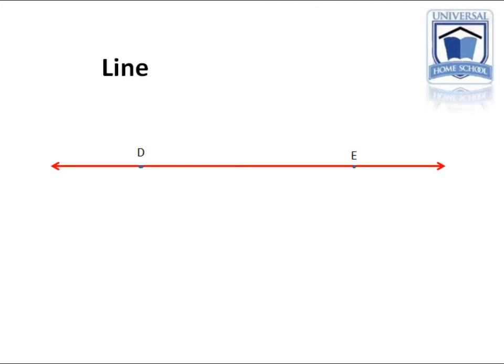Because this line extends in two opposite directions this is how we'd represent it. D, E and this line above it with the arrows pointing both ways.